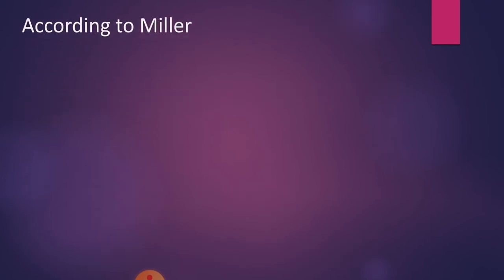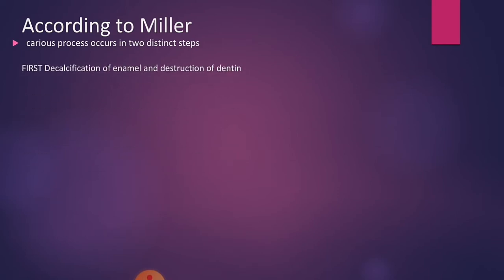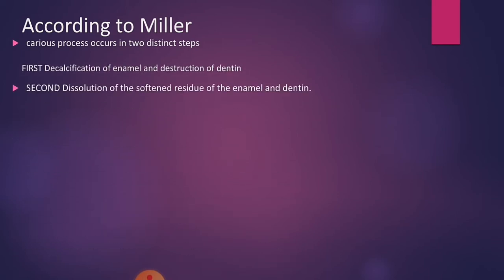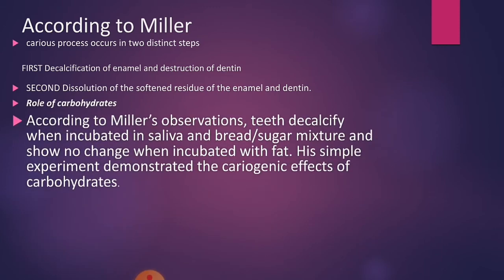According to Miller, the caries process occurs in two steps. First is the decalcification of the enamel and dentine. Second is the dissolution of the softened residue of the enamel and dentine. Regarding the role of carbohydrates: teeth became decalcified when incubated in saliva and bread or sugar mixture, but showed no change when incubated with fat.